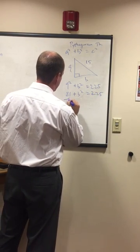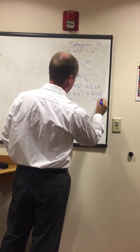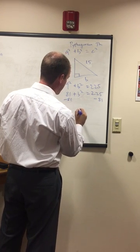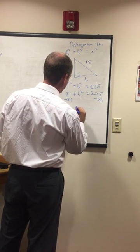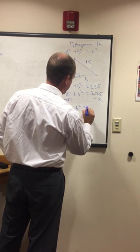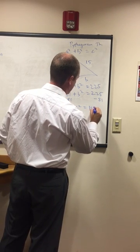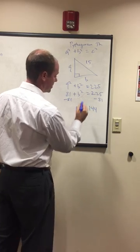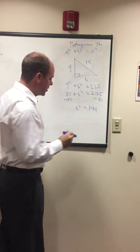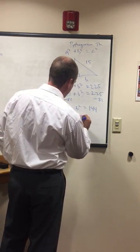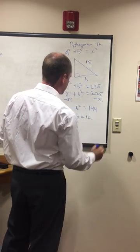Now we need to subtract 81 from both sides. Subtract 81 from both sides. And then we end up with B squared equals 144. And then we need to do square root of 144. We just gave that answer away a second ago. B equals 12.